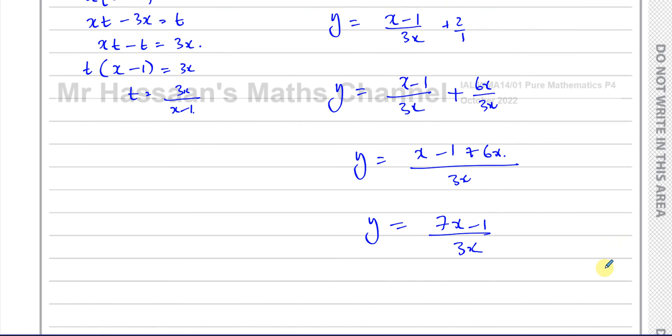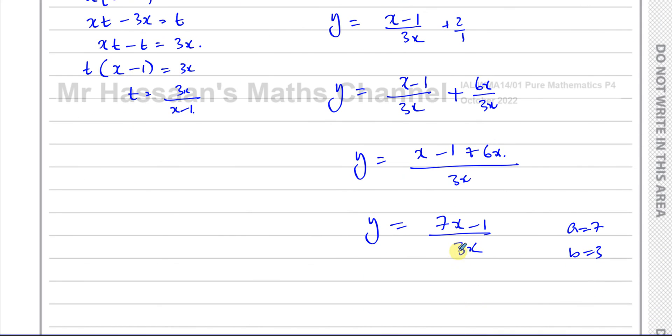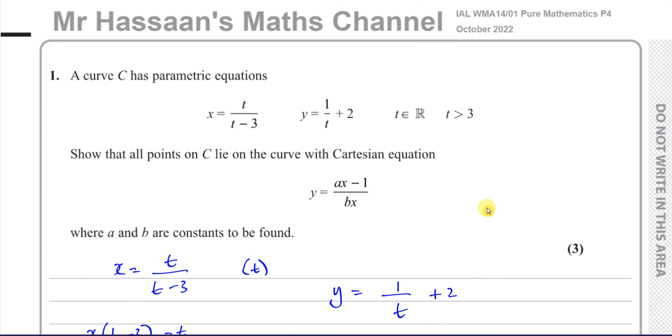If you want to, you can say a is 7 and b is 3. We had to show it is in the form y equals ax minus 1 over bx. So 7x minus 1 over 3x. So there we have our answer for question number one from this P4 paper. Very simple, easy start to this paper.